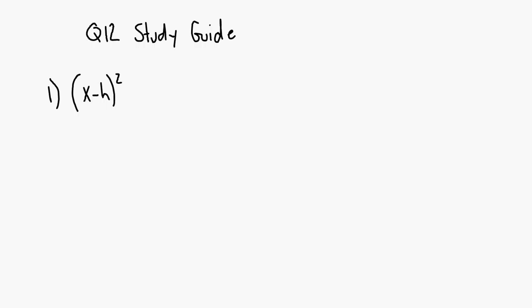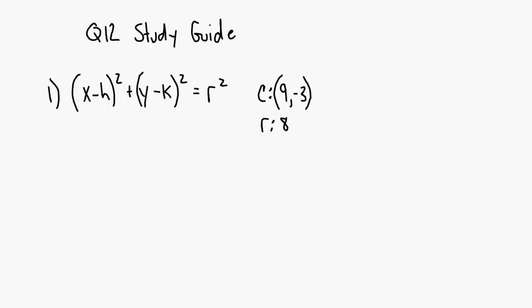Remember, the standard equation for a circle is x minus h squared plus y minus k squared equals r squared, where h and k is the center and r is the radius. So you're given the center at 9, negative 3, and you're given the radius of 8. So the equation would be x minus 9 squared plus y plus 3 squared equals 8 squared, which is 64.